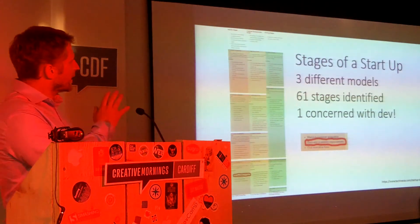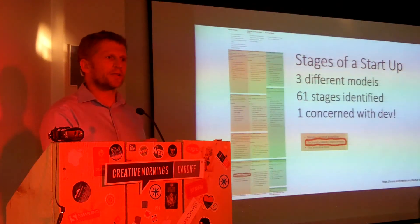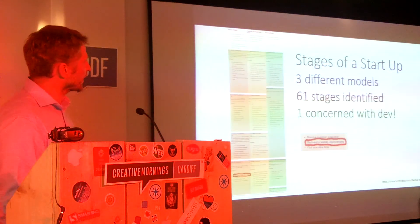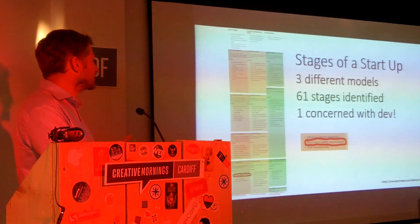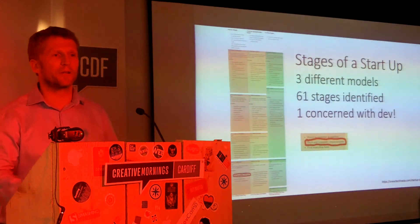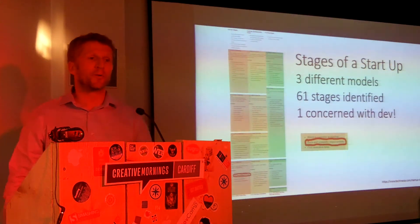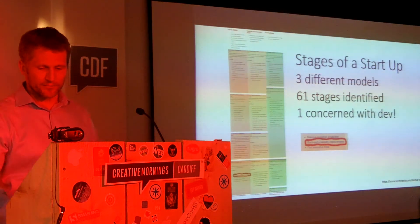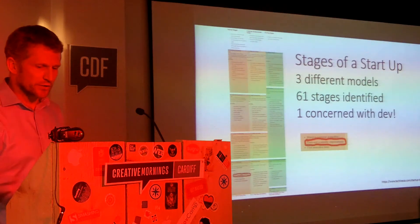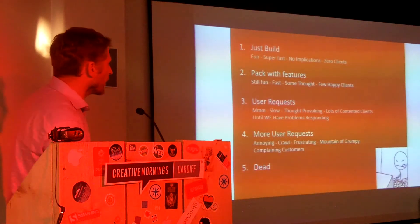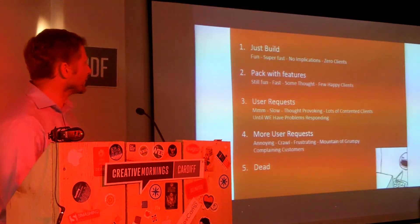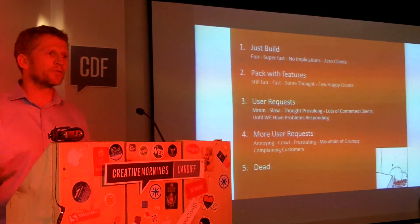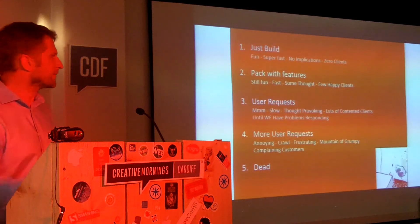Everybody talks about the startup and its stages from a business perspective. I did a bit of research and found three different models with 61 different stages identified, and only one actually says anything relevant to what we'd be doing — back-end sustainability improvements. That's us covered for the whole lifecycle of the startup. I've got my own view: there are five stages, and I think that little cartoon sums up the lifecycle of the code and the startup from a developer's perspective.